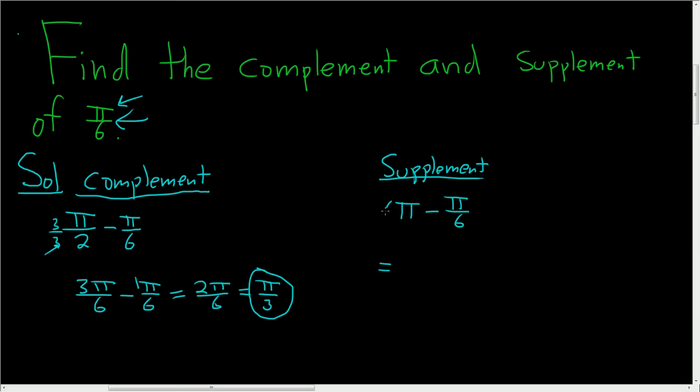To subtract we can multiply this by 6 over 6. So we get 6 pi over 6 minus pi over 6. And again you can think of this as being 1 times pi over 6. So 6 pi minus 1 pi is 5 pi.